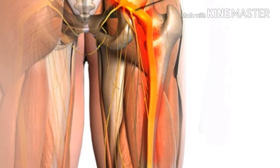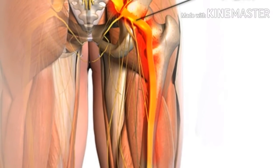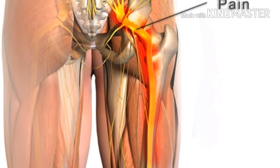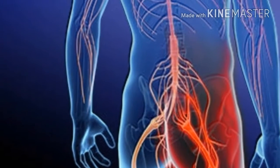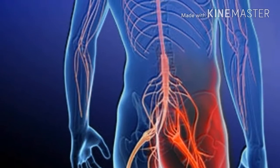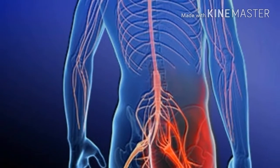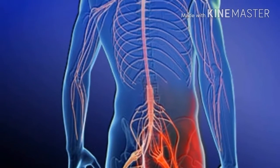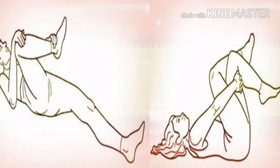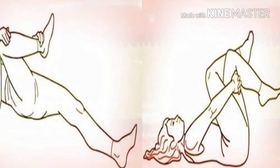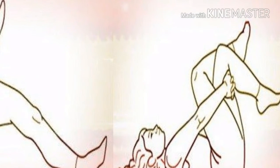Sciatica is most often caused by a herniated or slipped disc. It can also be caused by spinal injury or infection, degenerative disc disease, pregnancy, spinal stenosis, spondylolisthesis, and piriformis syndrome. Although there are many conventional treatments for sciatica, they may only ease the pain temporarily.